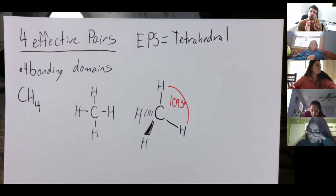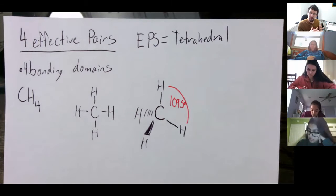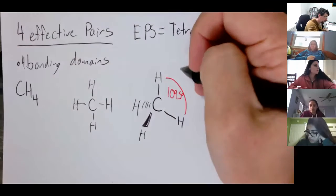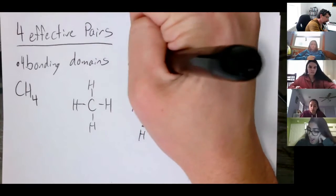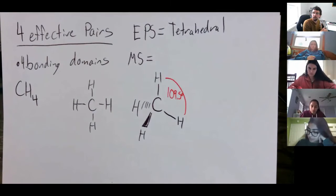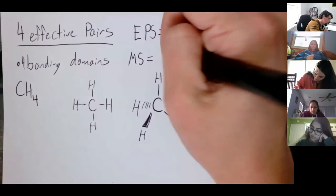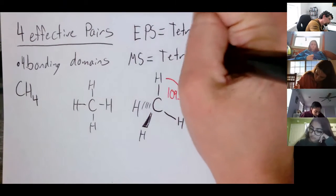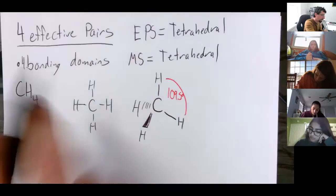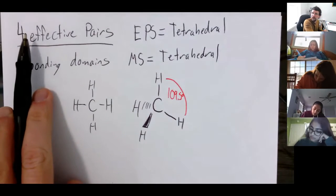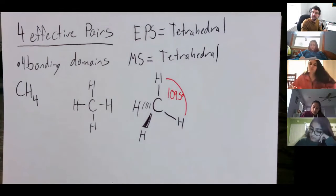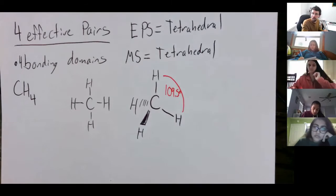This is going to become increasingly important when we start talking about polarities and you have to think about the three-dimensional shape of the molecule. What is the molecular shape in this case? Tetrahedral — yep, it's still tetrahedral. If the number of bonding domains equals the number of effective pairs, it's going to have the same molecular shape and electron pair shape.